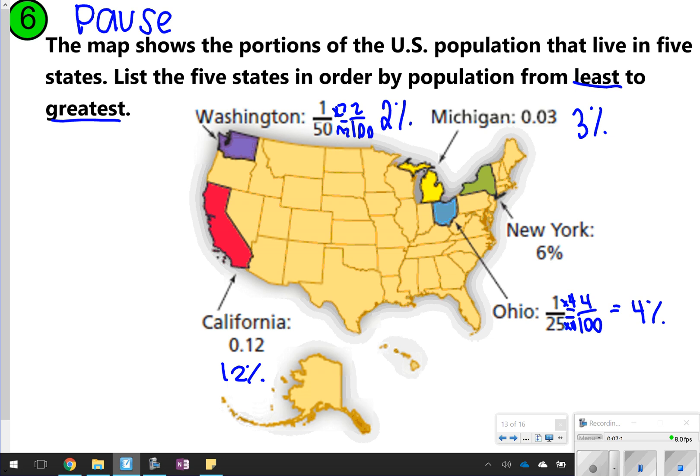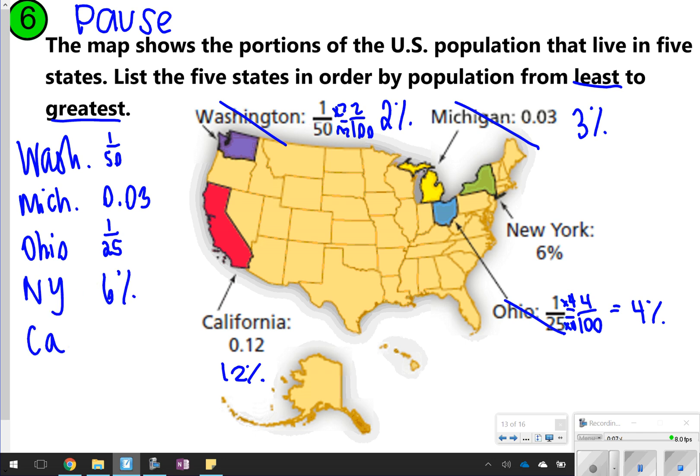Now I can easily see my least to greatest order. The smallest percentage was Washington at 1/50. The next one would be Michigan with 0.03 or 3%. The next one would be Ohio with 1/25 of the population. The next one would be New York with 6%. And last one would be California with 0.12 or 12% of the United States population. How did you do on number 6?